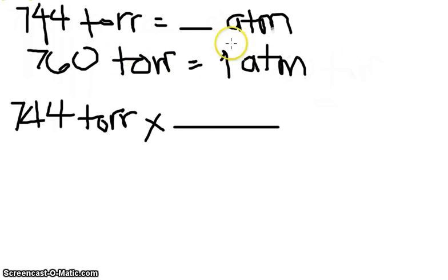Now, to properly use this equivalence statement as a conversion factor, we'll go back to what is the unit of the given value. We are given Torr, and to cancel Torr, the unit Torr should be in the denominator.